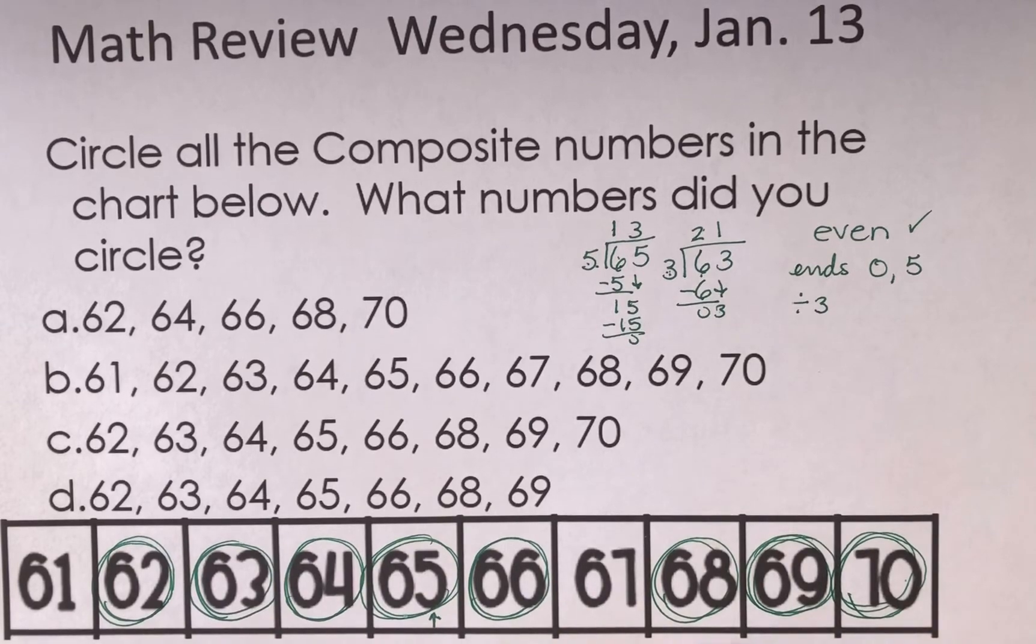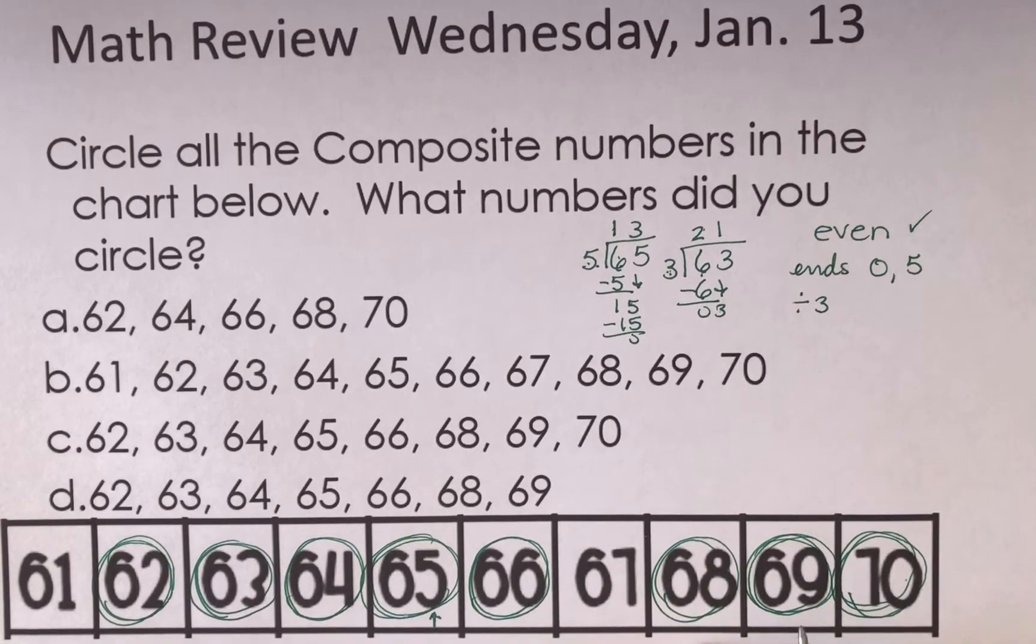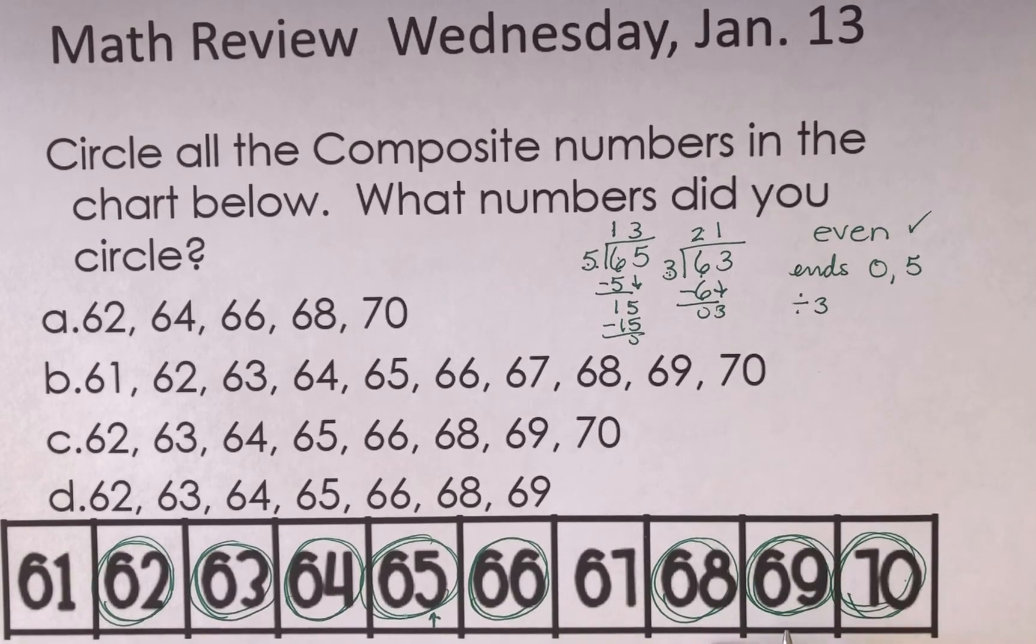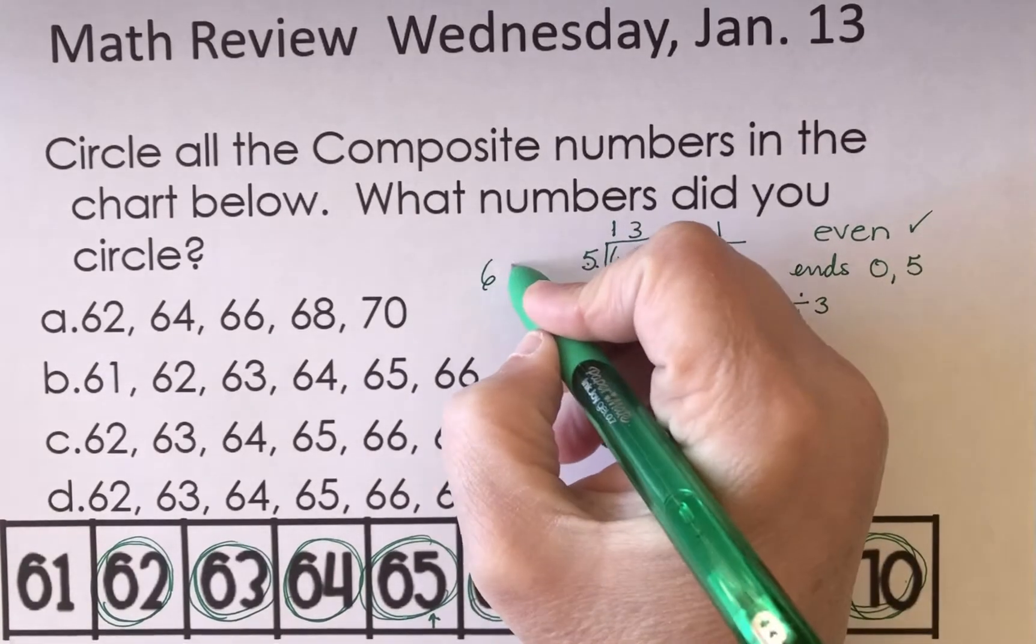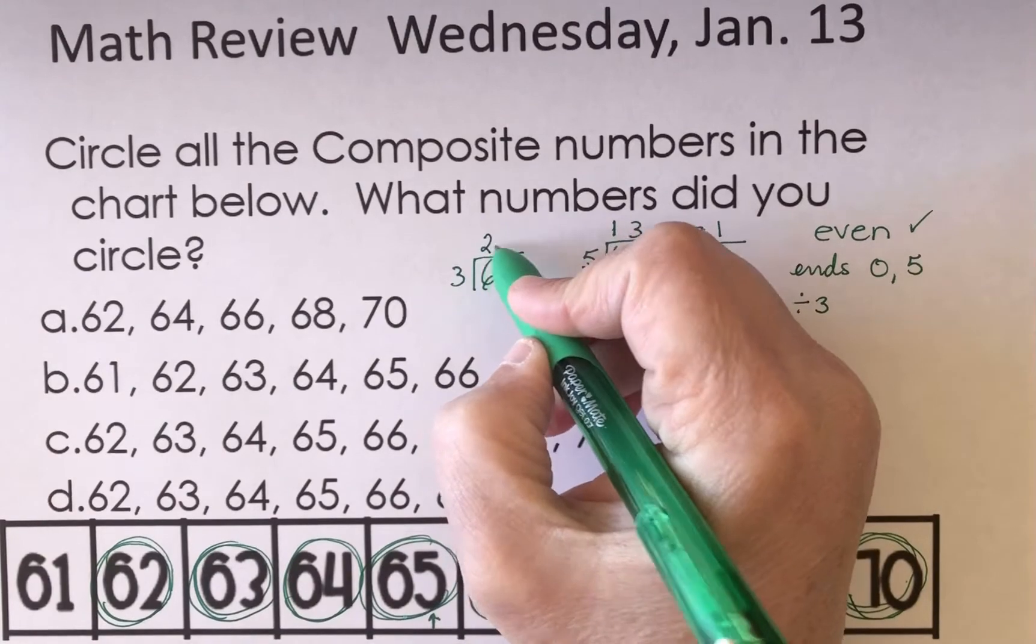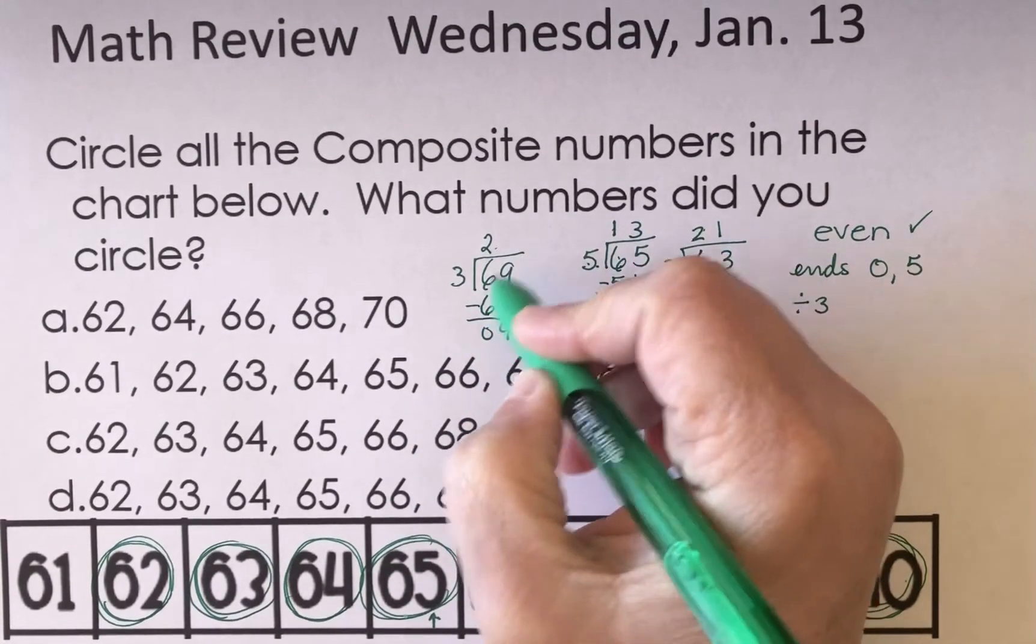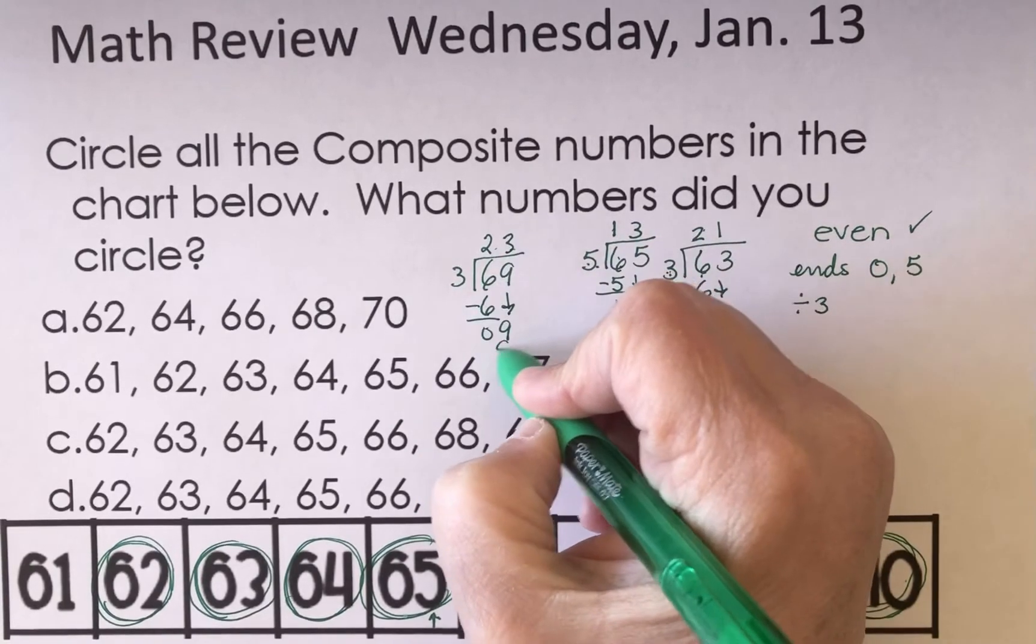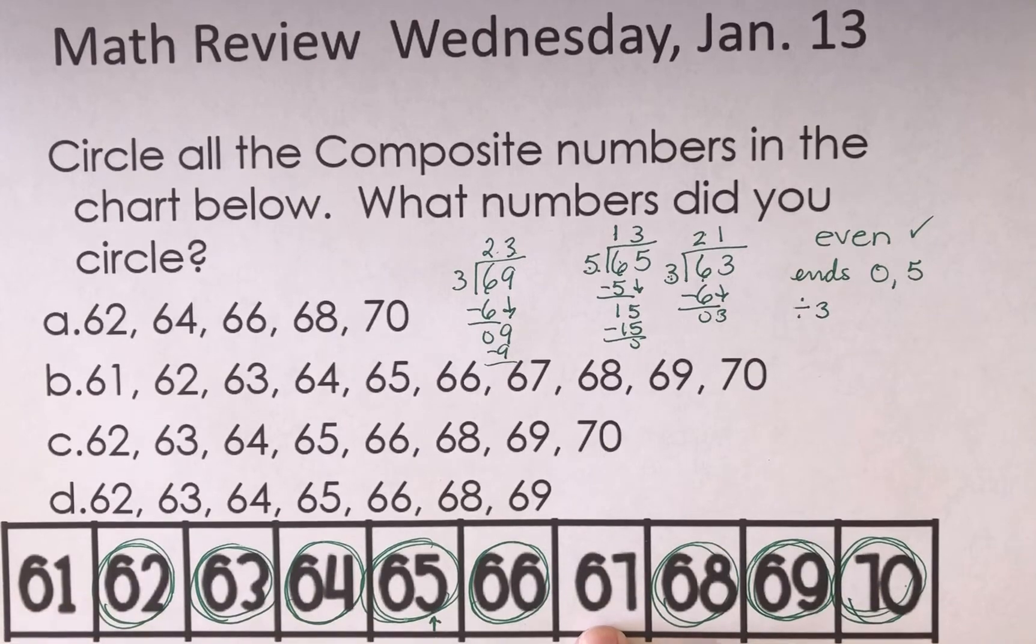Those of you who are still struggling with your facts, knowing what your facts are, that's why knowing composite and prime numbers can be a little bit difficult for you. Let's just look at 69. 69 divided by 3. 2 times 3 is 6. Bring down the 9. 3 times 3 is 9. There's no remainder. So now I'm just looking at 61 and 67.